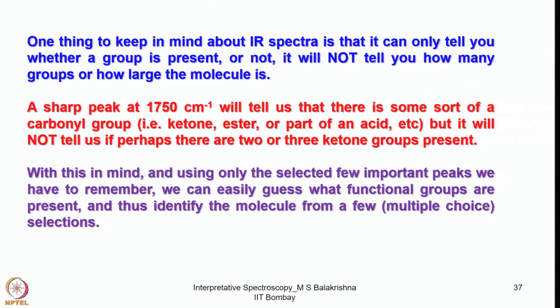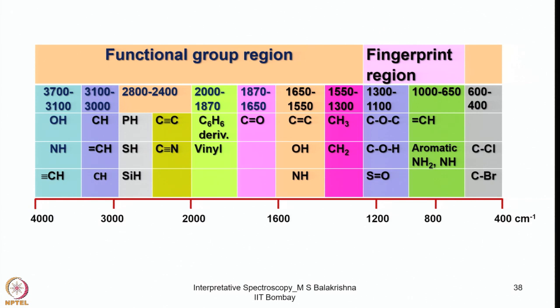For example, a sharp peak at 1750 cm⁻¹ will tell us there is some sort of carbonyl group, but it does not say whether it is a ketone, ester, or acid, nor does it tell us if there are two or three carbonyl groups present. Using only selected important peaks, we can guess what functional groups are present and identify the molecule. One should not depend heavily on IR spectroscopy alone to confirm the structure of a molecule.